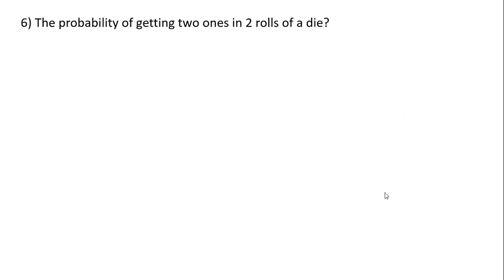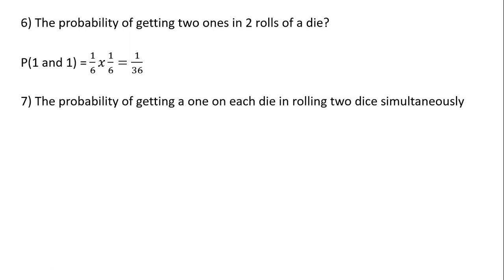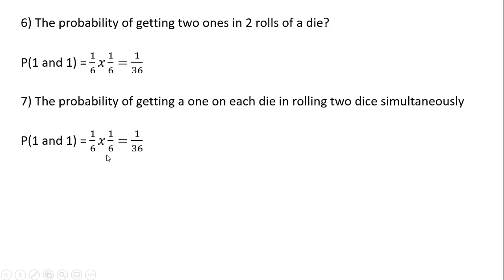Moving on to rolling dice. The probability of getting two ones in two rolls of a die — there are six sides, so the probability of getting any number is one-sixth. The probability of getting two ones is one-sixth times one-sixth, which is one over 36. Similarly, the probability of getting a one on each die when rolling two dice simultaneously: since what happens on one die doesn't affect the other, these are independent events, and the answer is again one-sixth times one-sixth.